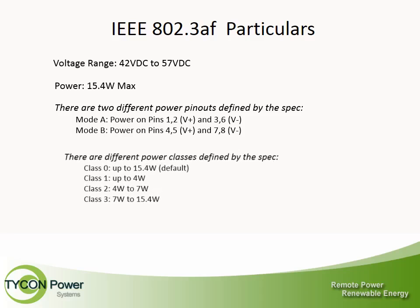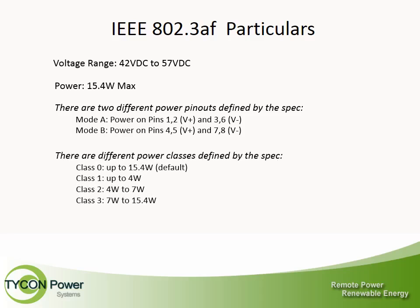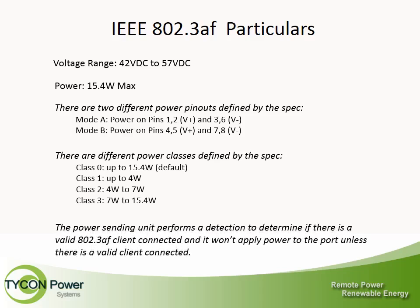There are different power classes defined by the 802.3 AF spec: Class 0 is up to 15.4W (the default), Class 1 is up to 4W, Class 2 is from 4W to 7W, and Class 3 is from 7W to 15.4W. The power sending unit performs a detection to determine if there is a valid 802.3 AF client connected, and will not apply power to the port unless a valid client is connected.